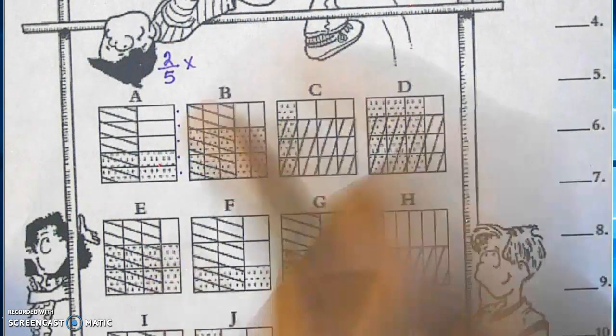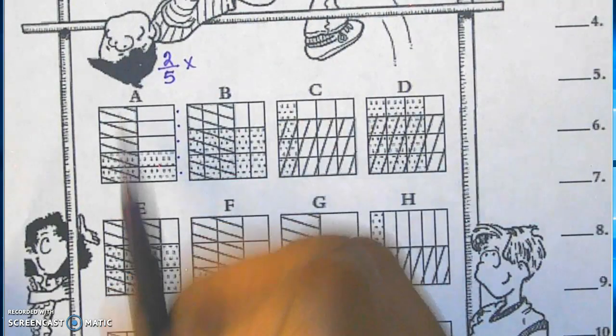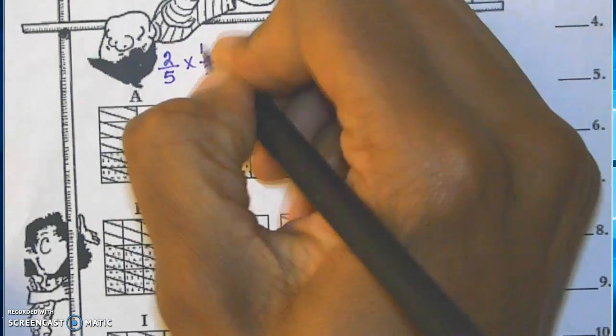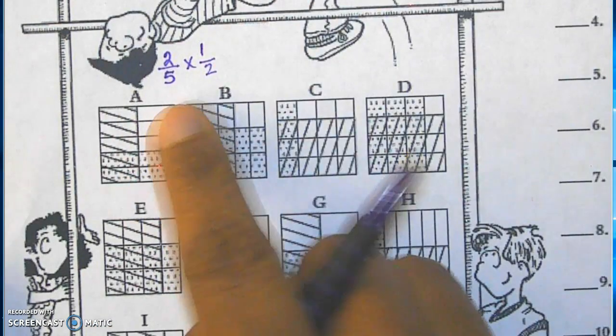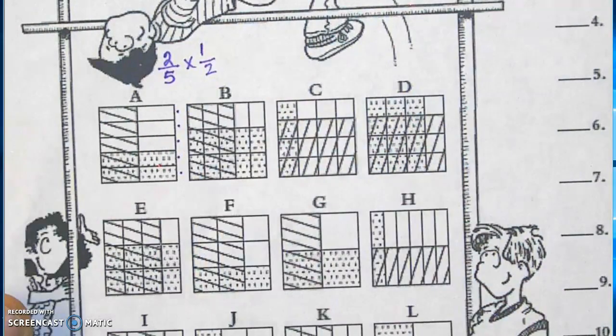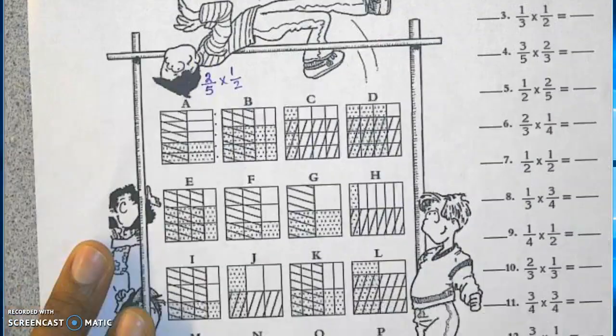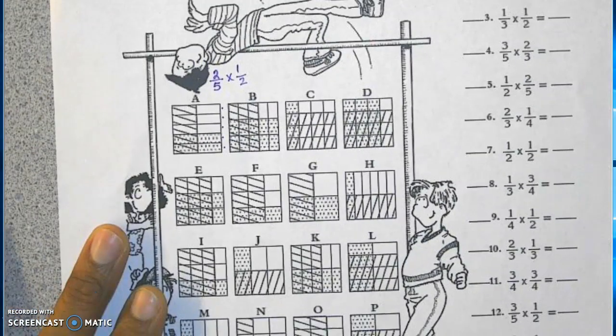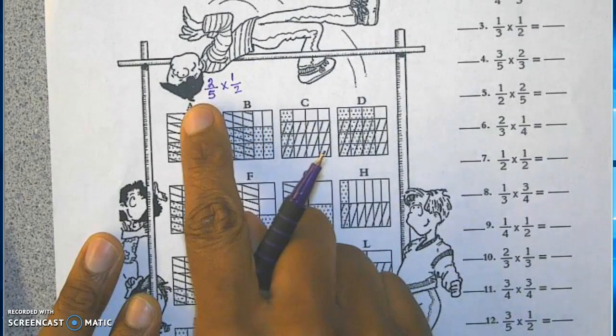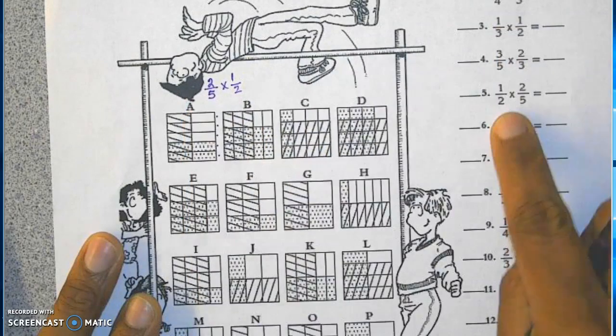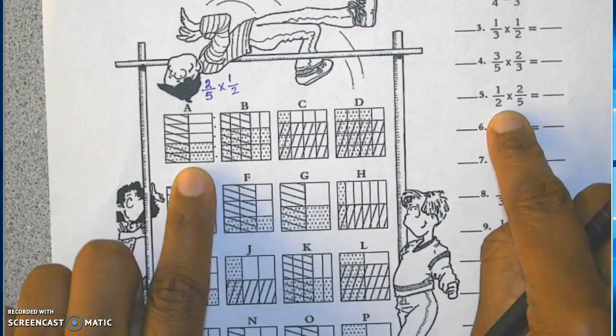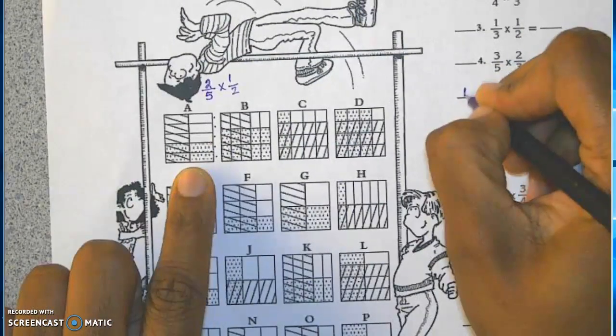My second fraction, it is divided. My columns are in two columns. And of my two, one is shaded. So I have two-fifths times one-half. What I do is I go to the right side of my paper and I'm looking for a problem that matches, that has two-fifths times one-half or one-half times two-fifths. And as I scan, I notice that number five is the matching problem. So here I'm going to write A.